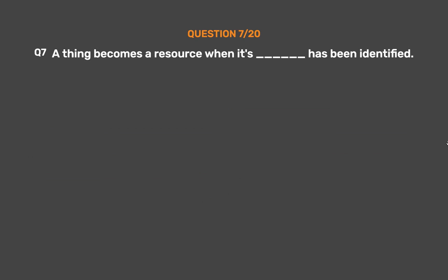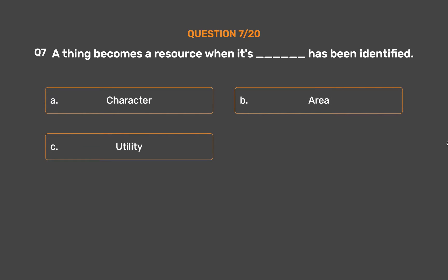Question number 7. A thing becomes a resource when its ___ has been identified. Option A: Character. Option B: Area. Option C: Utility. Option D: Availability.